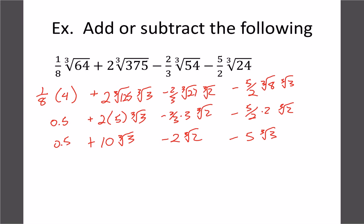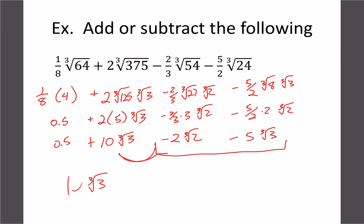Now combining like terms: the 1/2 by itself can't be combined with anything, so it stays. The 10∛3 and -5∛3 combine to give +5∛3. The -2∛2 can't be combined with anything. So the final answer is: 1/2 + 5∛3 - 2∛2. It doesn't matter what order you write them — I put them in roughly highest to lowest order.